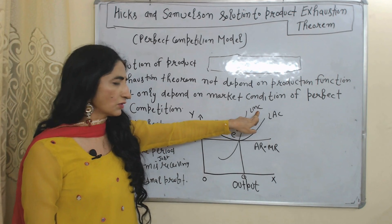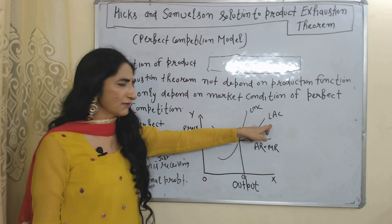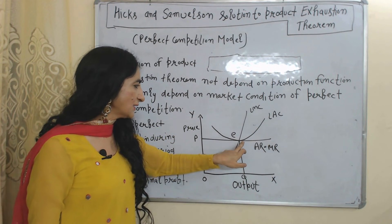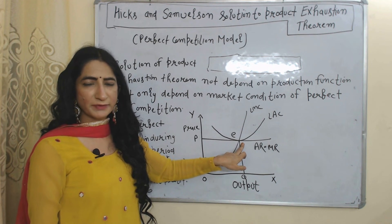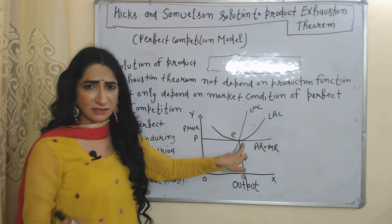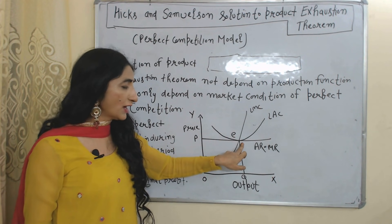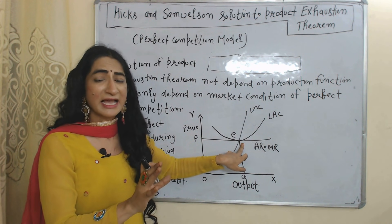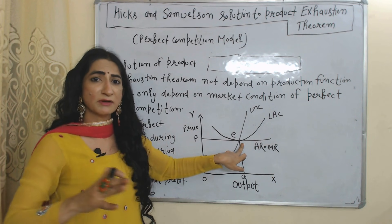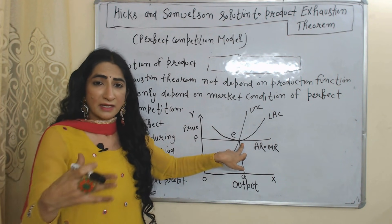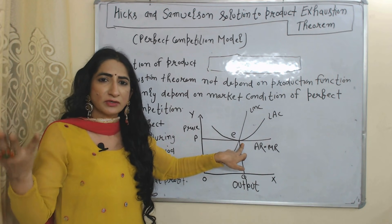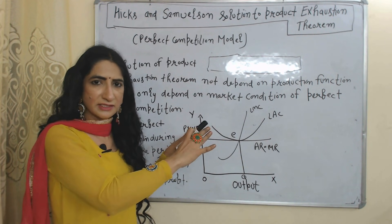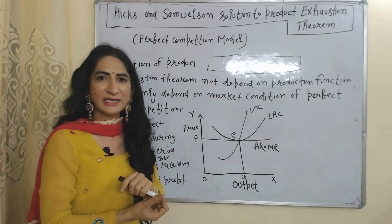Here you can see on the x-axis we have output, on the y-axis we have price. LMC is long-run marginal cost, LAC is long-run average cost, and AR and MR are average revenue and marginal revenue. At point E, under perfect competition in the long run, the firm just receives normal profit. So at point E it is possible that the Product Exhaustion Theorem arises — factors of production are paid equal to their marginal product and total product is exhausted only at this point.